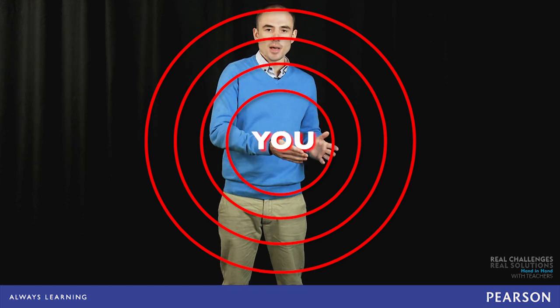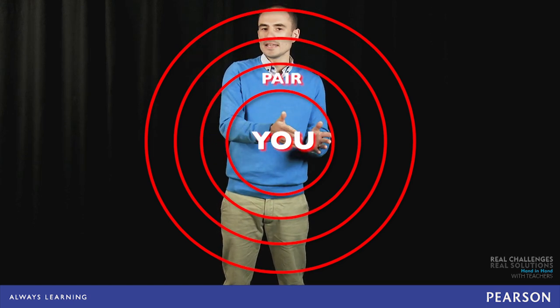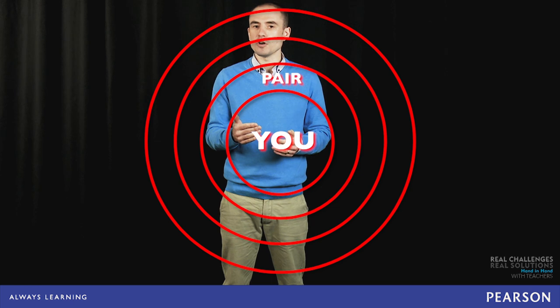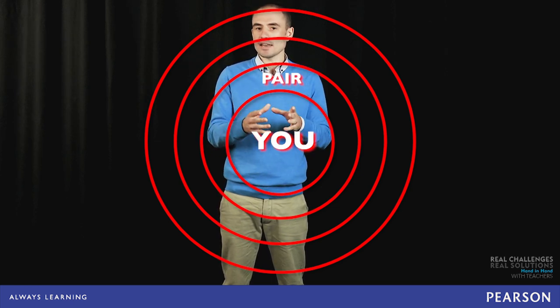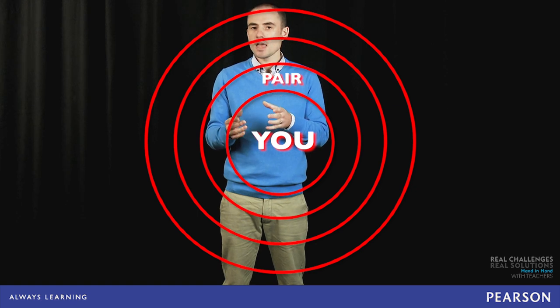Then, they turn to their partner. Student A tells student B the animals they thought of, and those that student B doesn't already have, are written in the second layer, and vice versa. Now the pair of students have the same words.